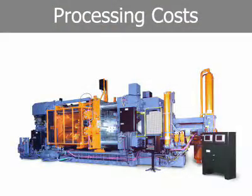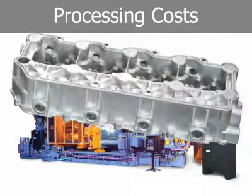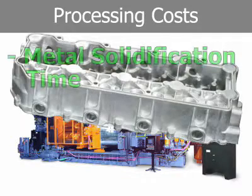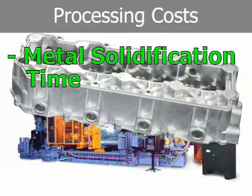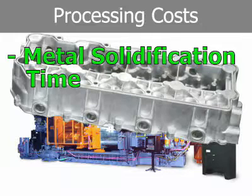Machine cycle time is controlled to a lesser extent by factors that can be addressed in the design of the product. The time required for metal to solidify usually depends on the most massive feature of the component. Massive product features should be avoided in favor of thinner walls reinforced with gussets, ribs, and webs.